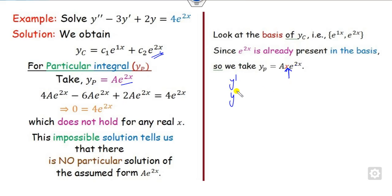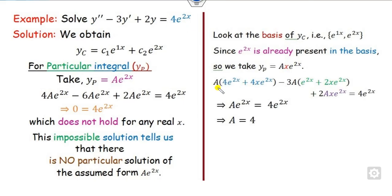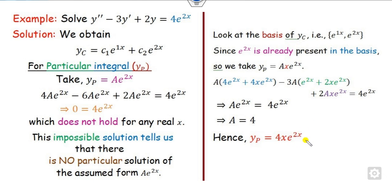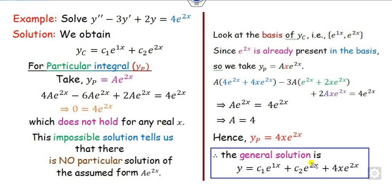With the corrected form yp = Axe^(2x), we find y' and y'', then substitute back into the equation. After simplifying and comparing coefficients, A = 4. So the particular integral is yp = 4xe^(2x). Substituting into the general solution formula, we get the required solution.